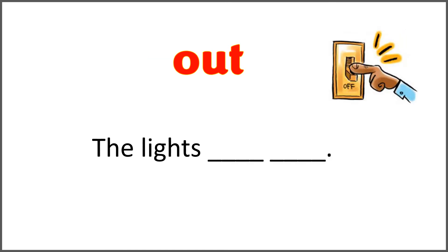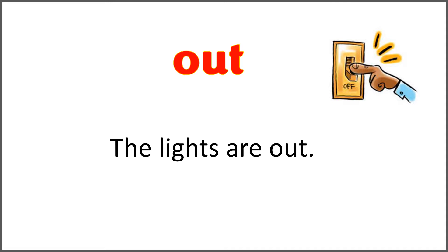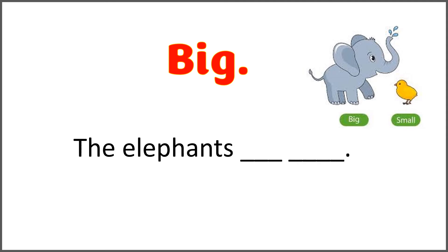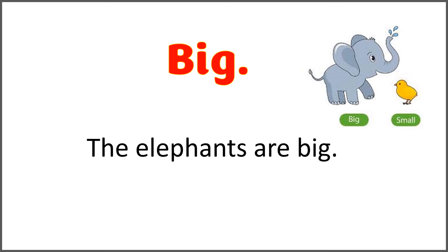The given word is 'out' and the sentence is 'the lights blank blank.' Use the word 'out' with 'are' to complete the sentence. The lights are out. The given word is 'big.' The elephants blank blank. Use the word 'big' with 'are' to complete the sentence. And the answer is: the elephants are big.